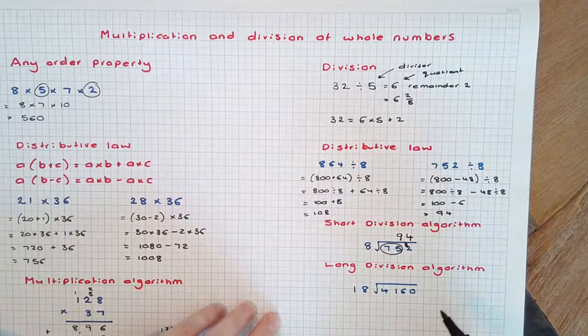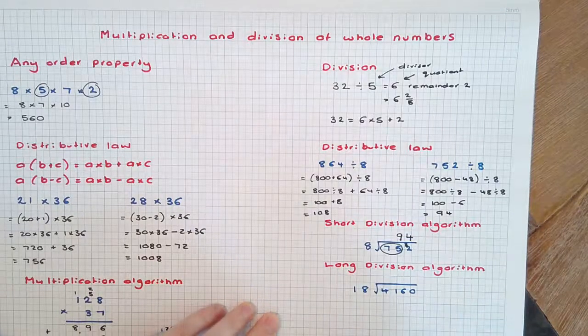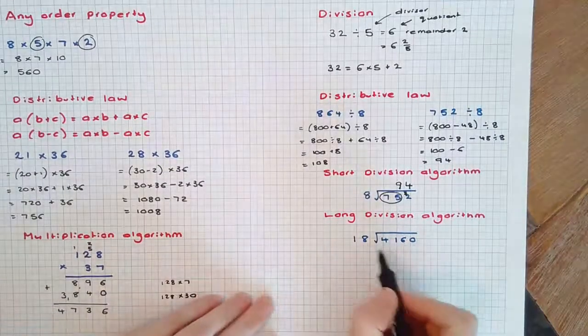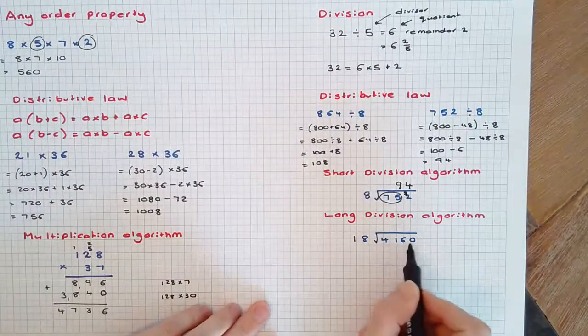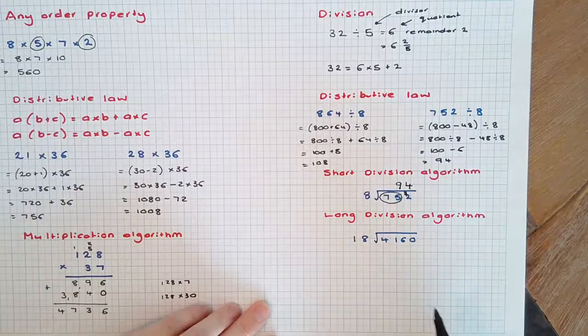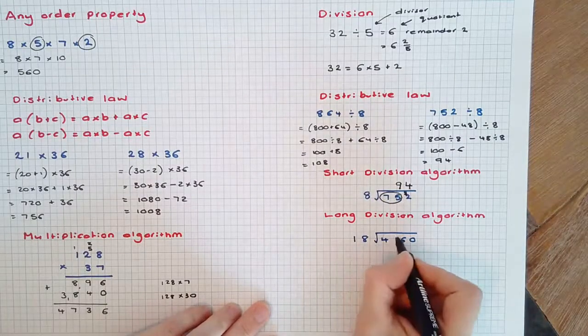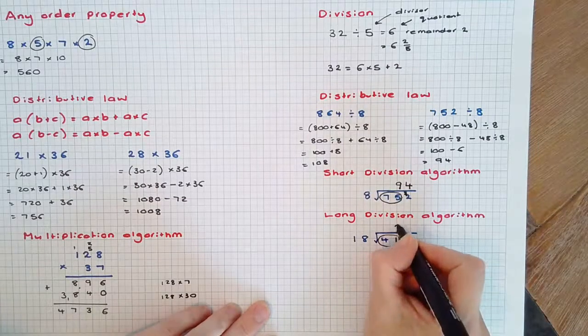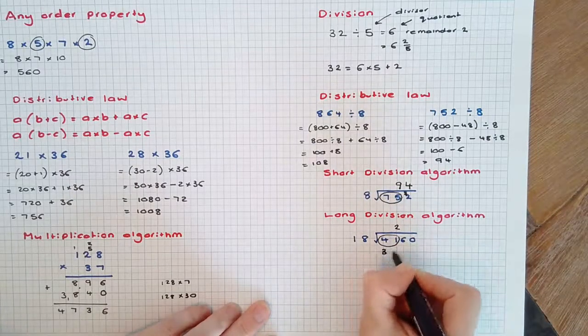When the divisor is large, we can use a long division algorithm. In this case, we're dividing 4160 by 18. 18 will go into 41 twice, which is 36.